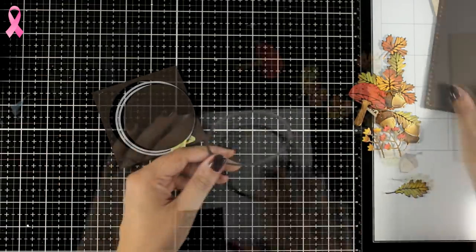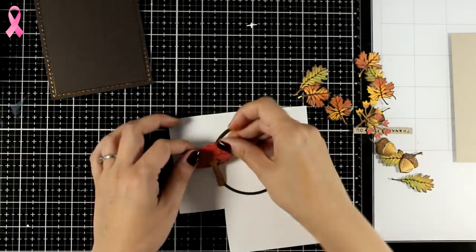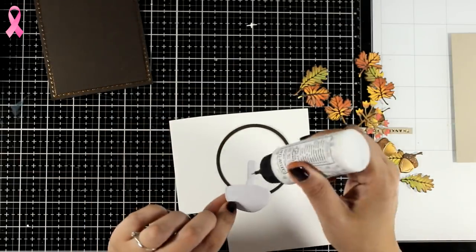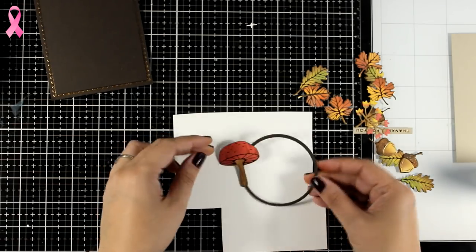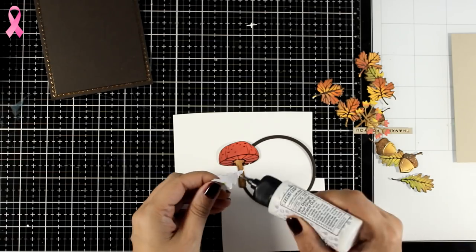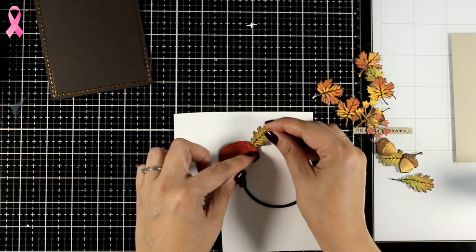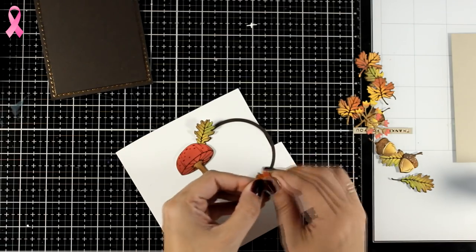And now it's just a matter of sticking everything around that ring. I'm working on a scrap piece of white paper here so you can see better what I'm doing. Of course you can stick that ring directly on top of your background panel and then go ahead and stick everything down. I just decided to do it this way.